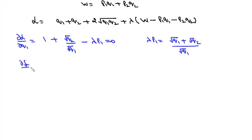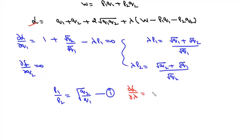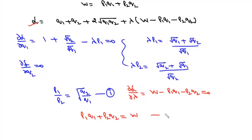By symmetry, ∂L/∂q2 = 0 gives λ·p2 = (√q2 + √q1)/√q2. Dividing the first by the second gives p1/p2 = √q2/√q1, which is our first equation. Differentiating with respect to λ gives the budget constraint p1·q1 + p2·q2 = w as our second equation.